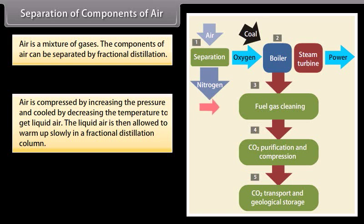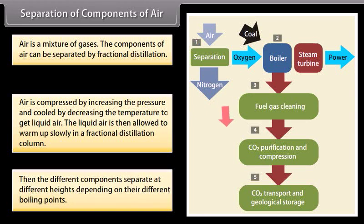Air is compressed by increasing the pressure and cooled by decreasing the temperature to get liquid air. The liquid air is then allowed to warm up slowly in a fractional distillation column. Then the different components separate at different heights, depending on their different boiling points.